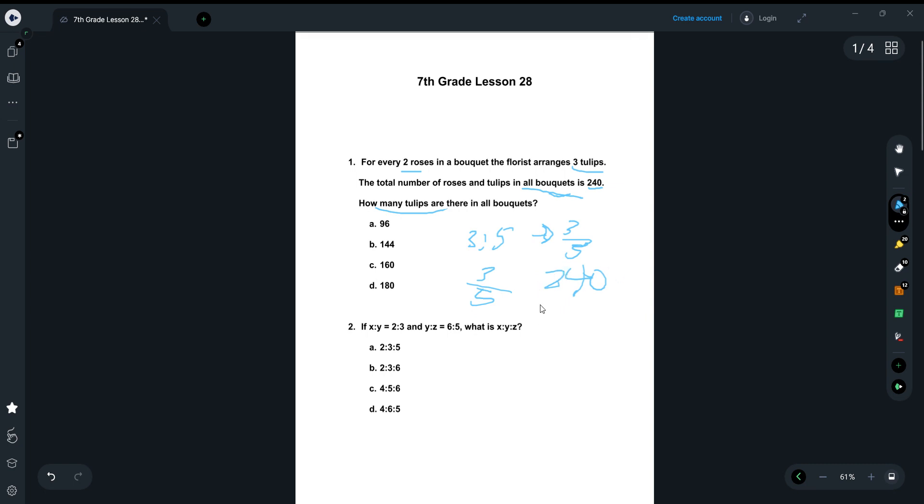So first let's divide 240 by five. We've got 48. So we get three times 48. And in the end, that would equal 144. So your answer for this would be B.